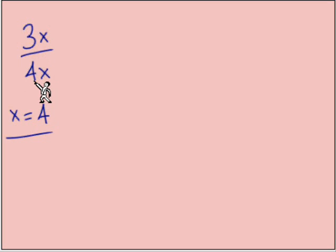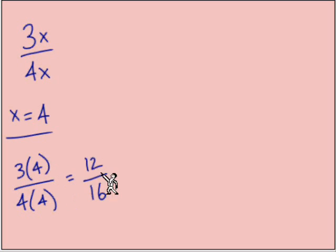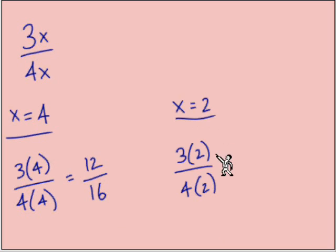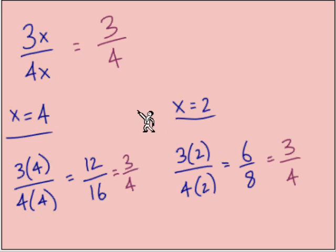We'll check out this idea again if we do our evaluating. This one is 3 times 4 over 4 times 4, that's 12 sixteenths. If x equals 2, we'll have 3 times 2 over 4 times 2, that's 6 eighths.